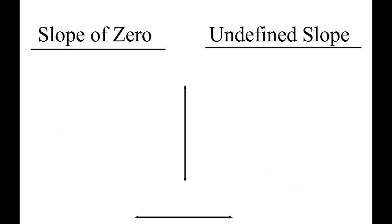There are two special cases. Flat lines have a slope of zero. Flat lines are called horizontal lines.